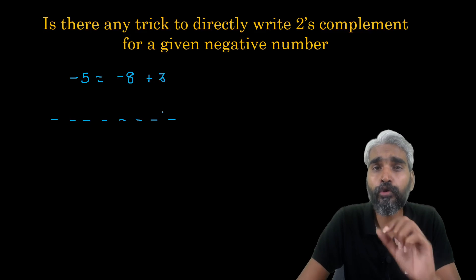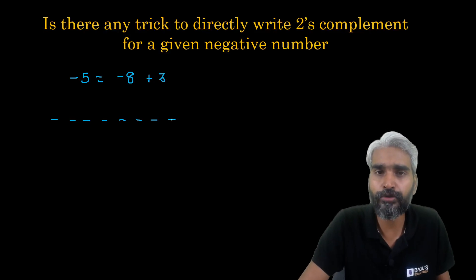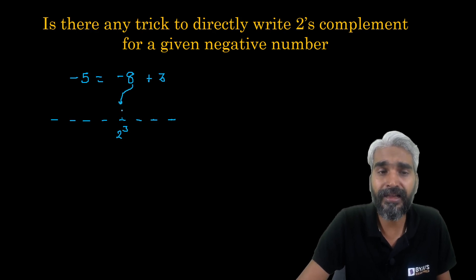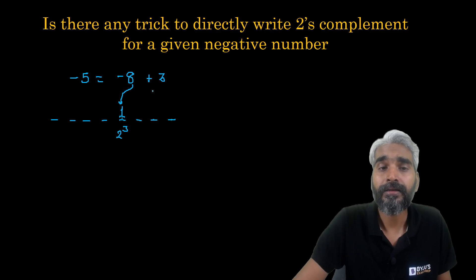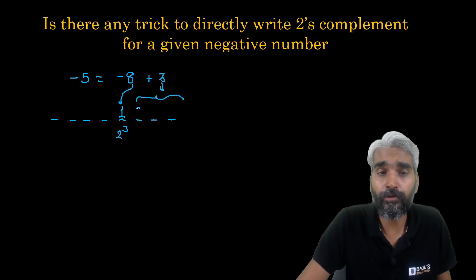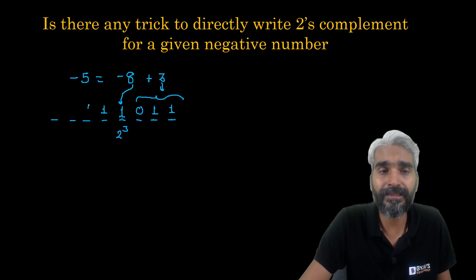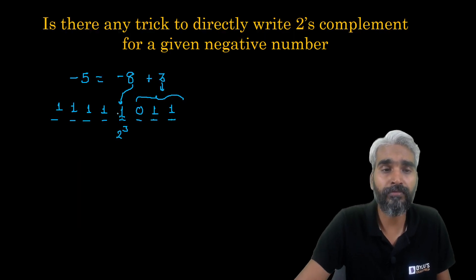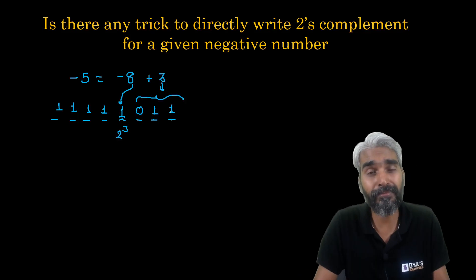In the eight bit positions, find the bit whose weight equals eight — that is two raised to the power three. Make that bit equal to one for the minus eight. Then in the remaining bits, write three, which is zero one one. The leftover bits are all ones: one one one one one. So the result is one one one one one zero one one, which matches the earlier result.